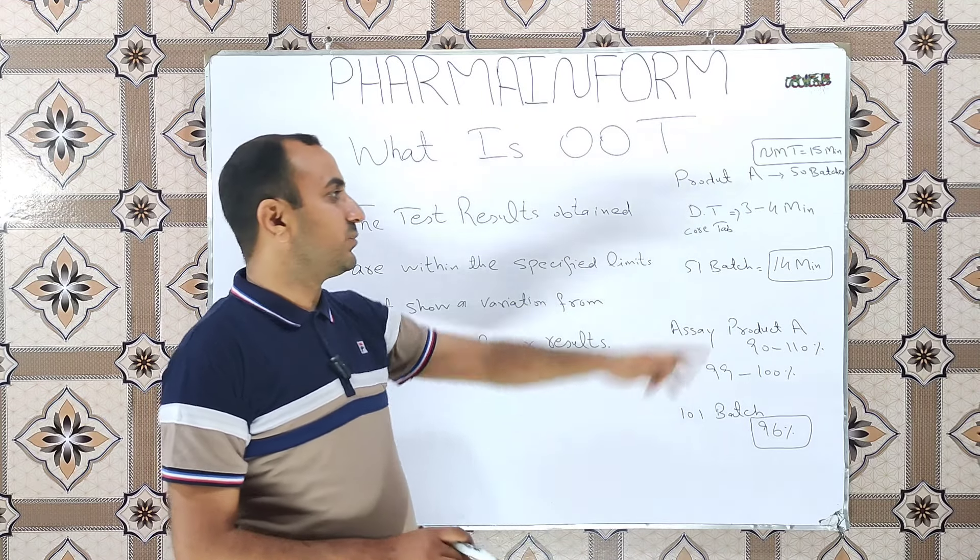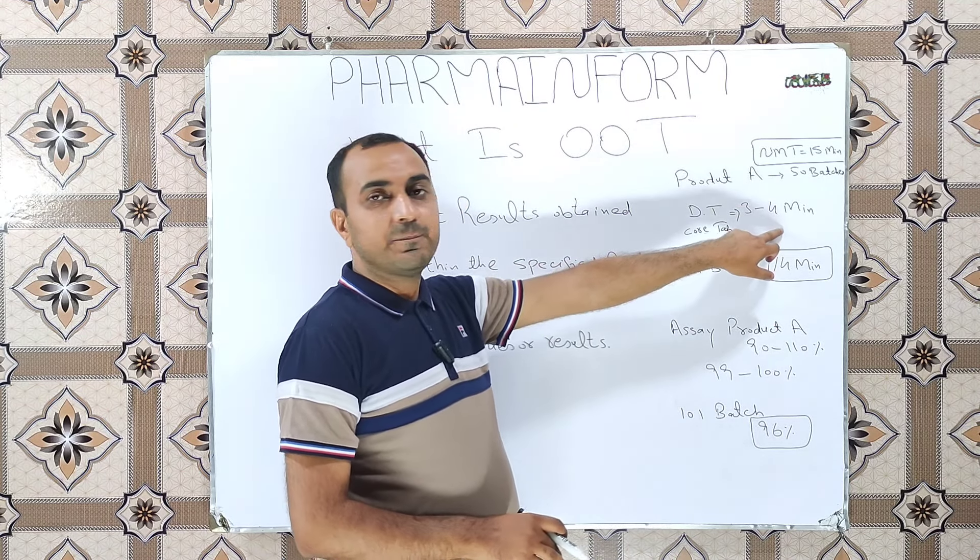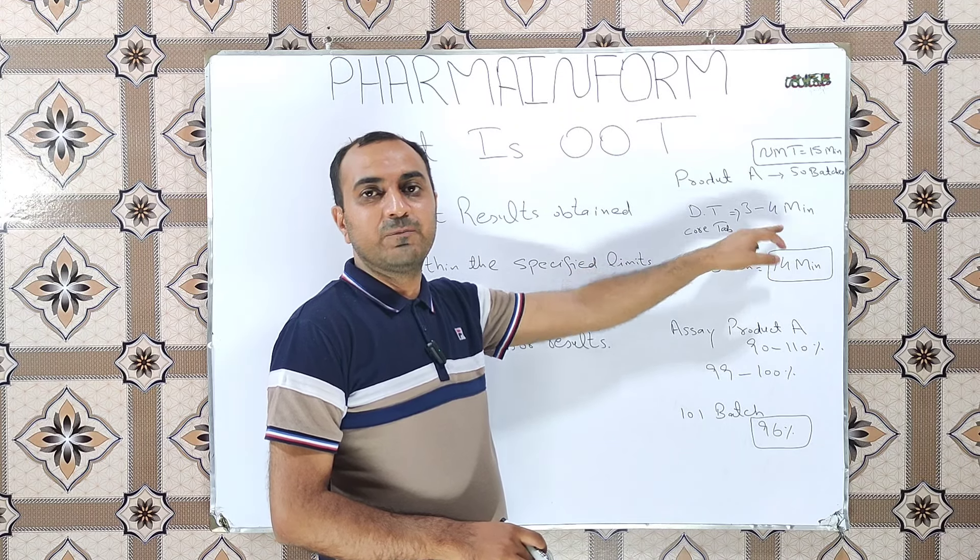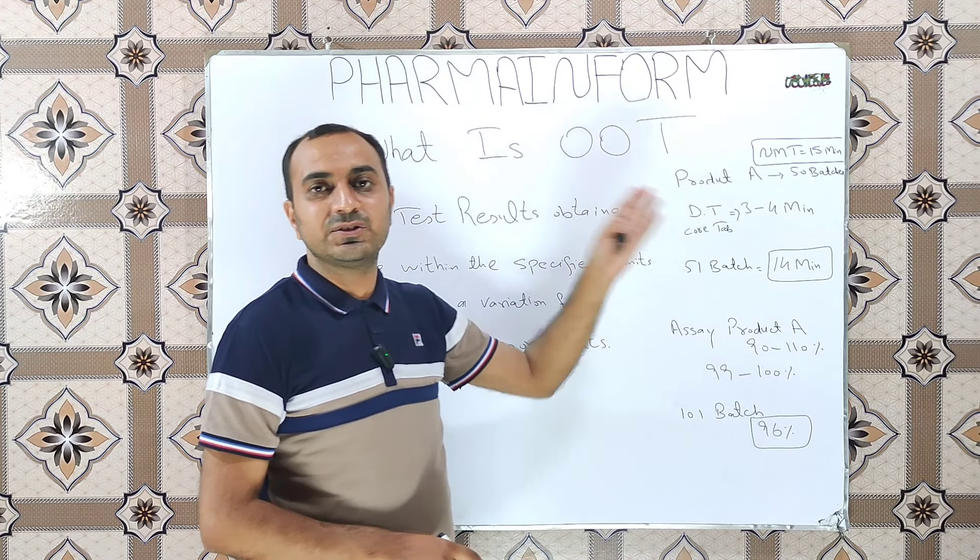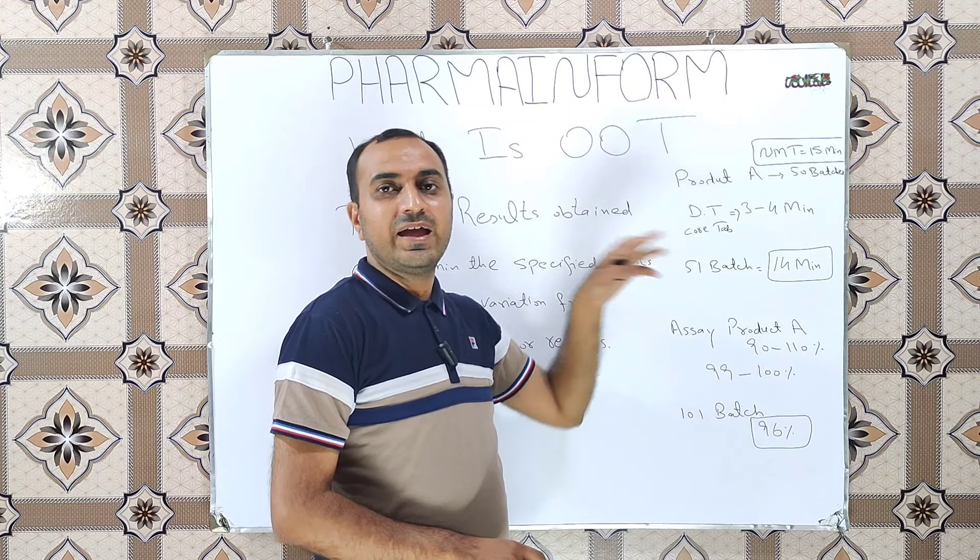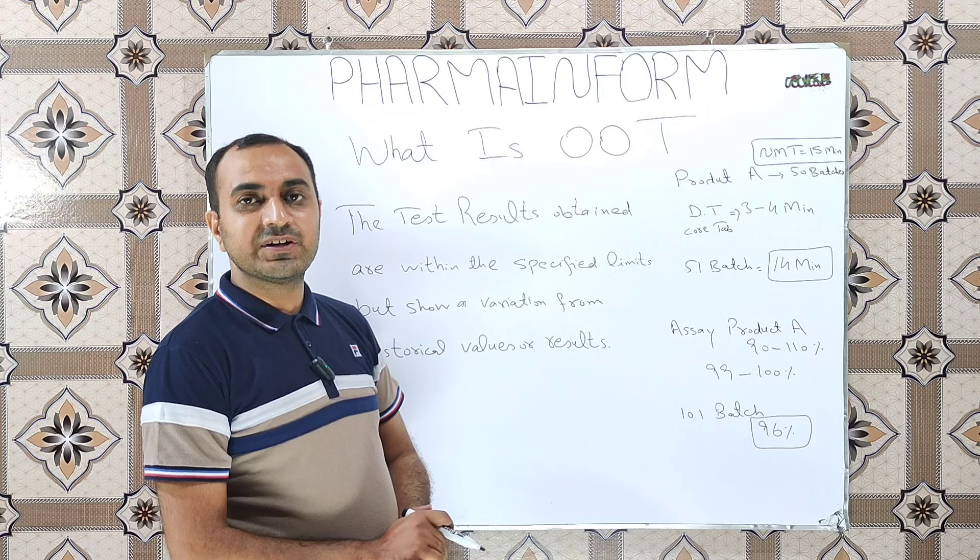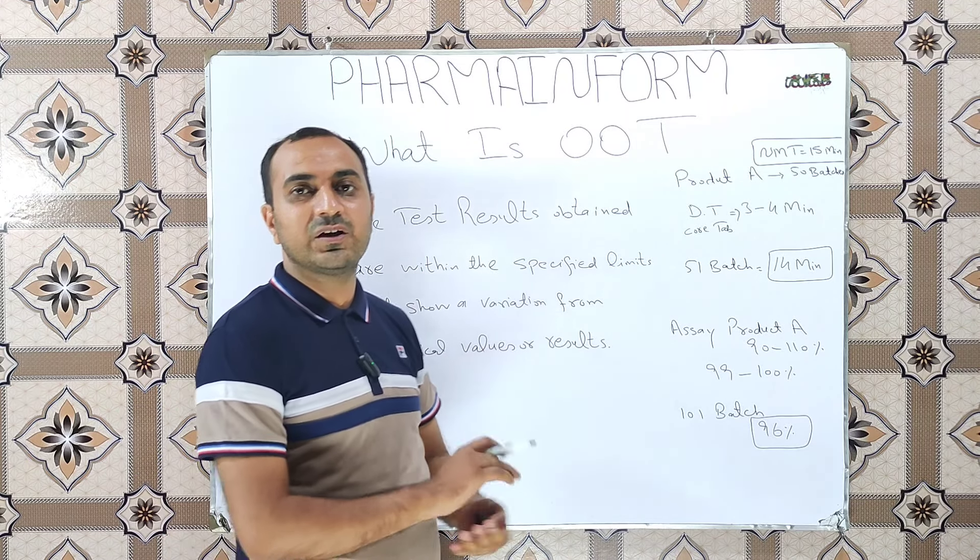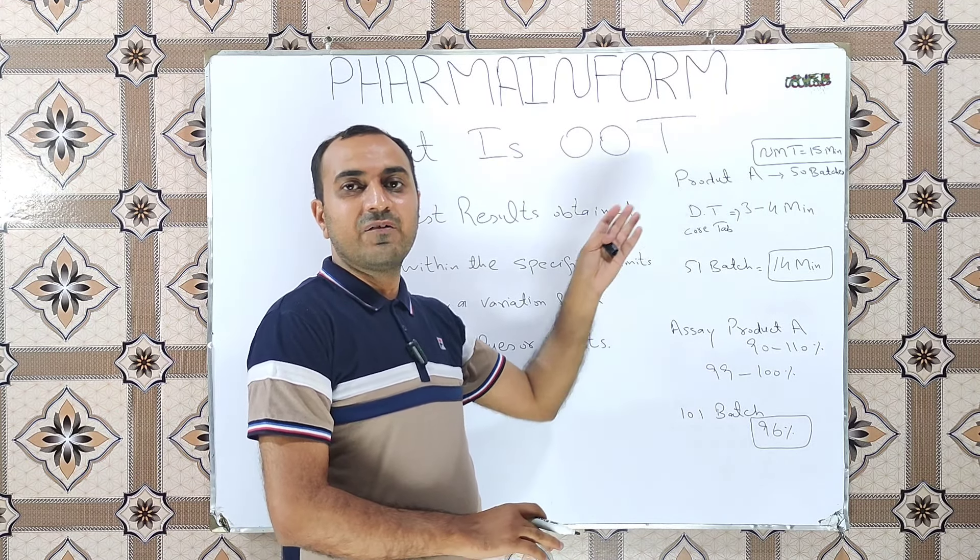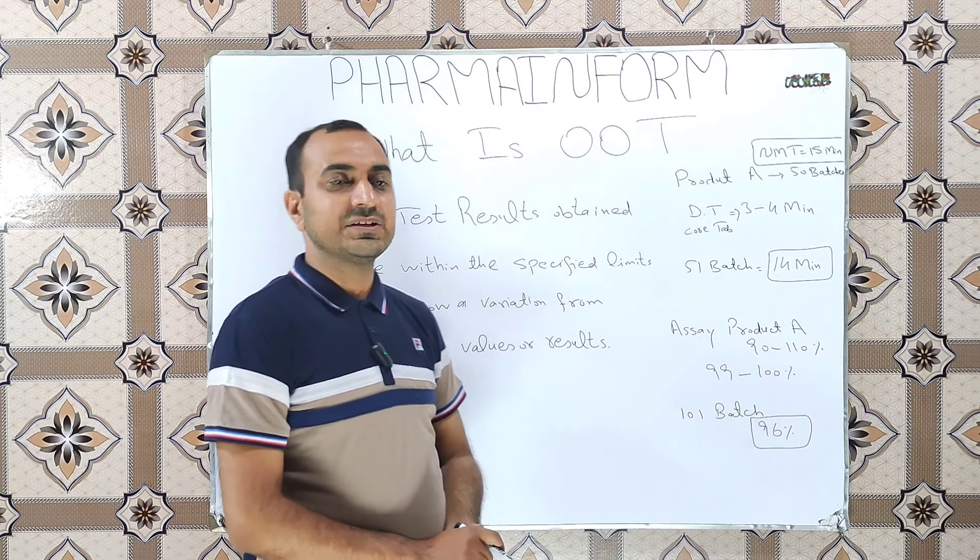Although it was within the specifications, it was different from the previous historical data. Meaning previous history was 3 to 4 minutes, but now we have 14 minutes. In this case, we will carry out the out of trend investigation and we will try to find out the root cause - why our disintegration time increased in this specific batch.